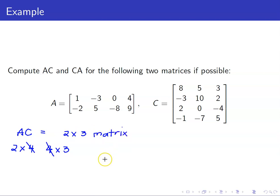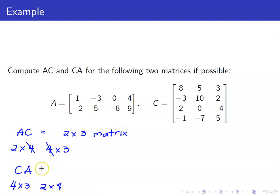Let us look at C times A. C is 4 by 3 whereas A is 2 by 4. The number of columns of C is 3, which does not equal the number of rows of A, which is 2. Therefore, CA is not defined. Hence, we will only compute AC, which is a 2 by 3 matrix.